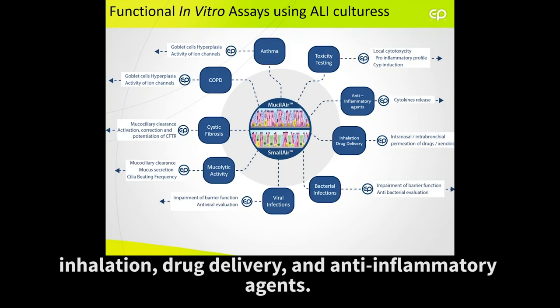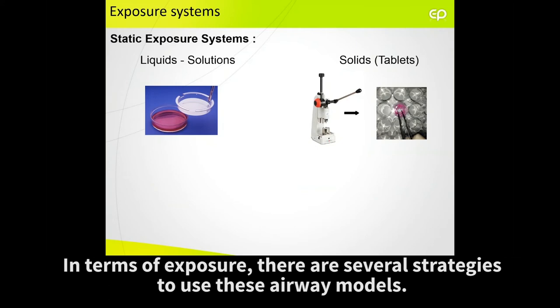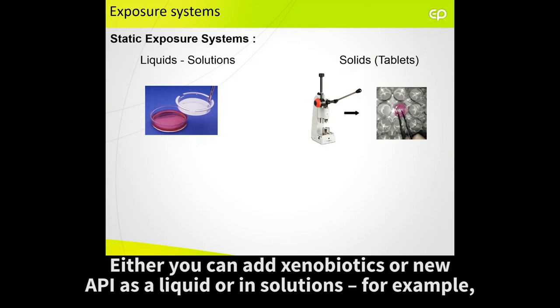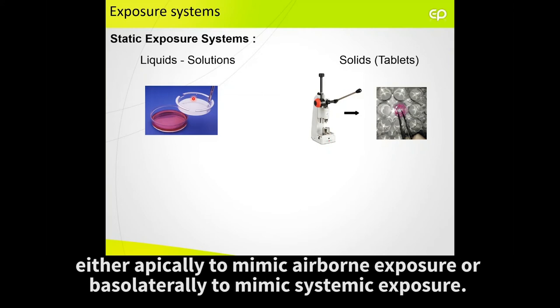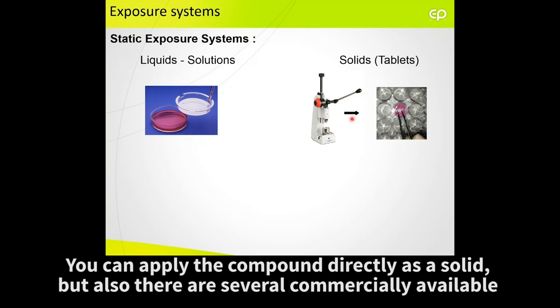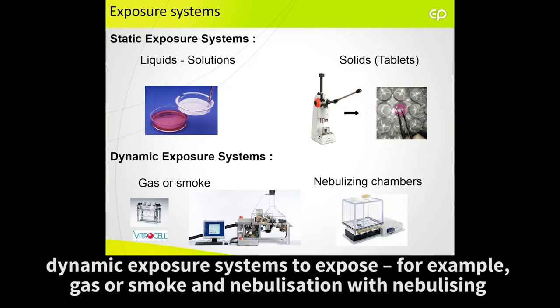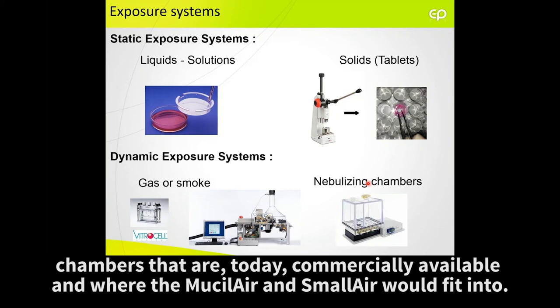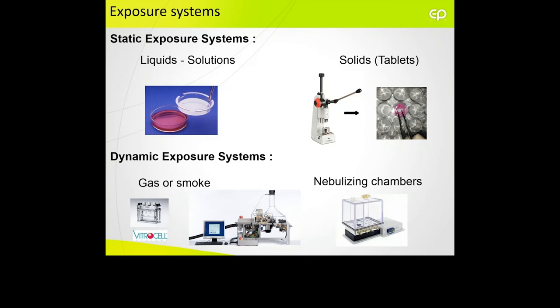In terms of exposure, there are several strategies to use these air-liquid interface models. Either you can add xenobiotics or new APIs as a liquid or in solution — for example, apically to mimic airborne exposure, or basolaterally to mimic systemic exposure. You can apply the compound directly as a solid, but also there are several commercially available dynamic exposure systems to expose, for example, gas, smoke, or nebulization with nebulizing chambers where the MucilAir and the SmallAir could fit into.